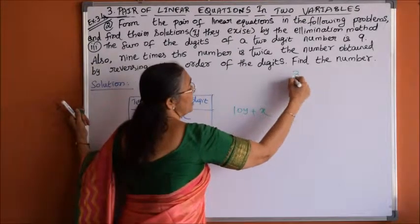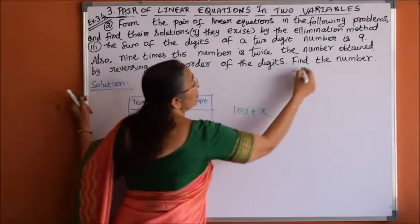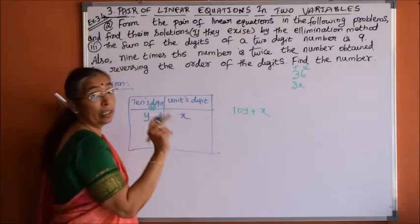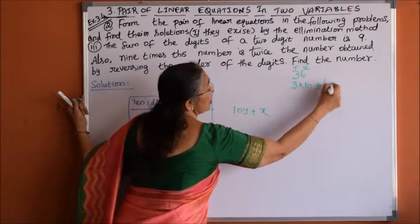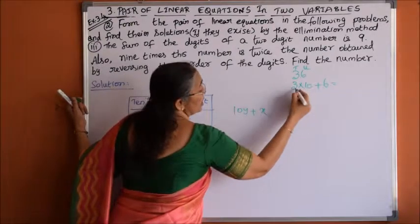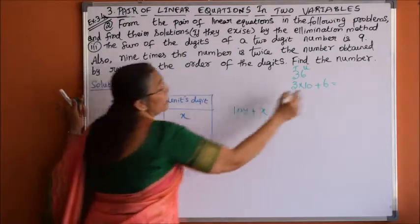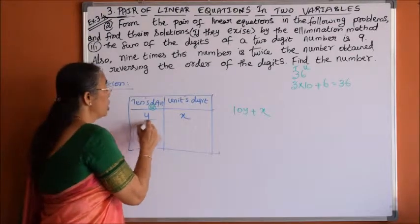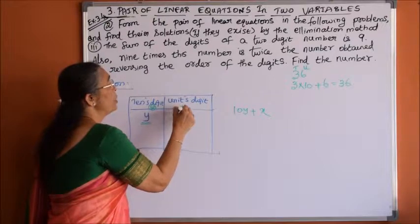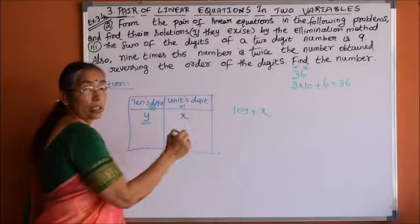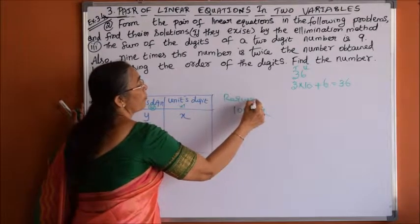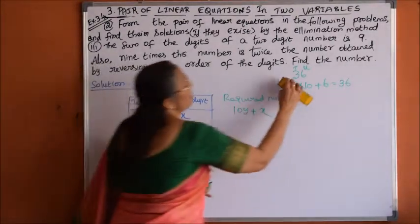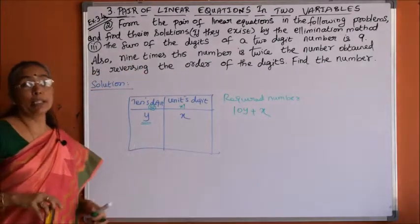For example, if your number is 36 — writing in expanded form — the ones digit is 6 and the tens digit is 3. We multiply the digit in the tens place by 10, so 3 tens are 30, plus 6 ones are 6, giving 36. In the same way, we consider the digit in the tens place as y, multiplied by 10, and x as the units digit. That is why the required number is 10y plus x.